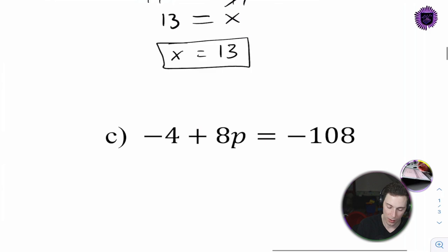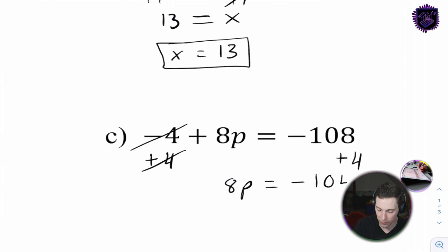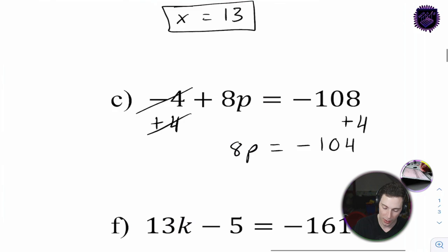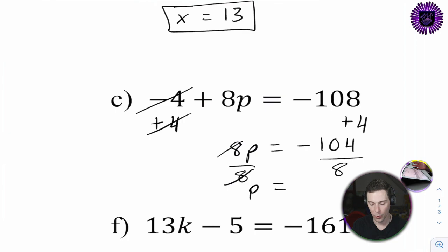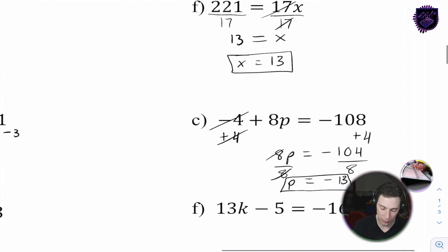Question 4C. We have negative 4 plus 8p equals negative 108. Let's add 4 to both sides. Negative 4 plus 4 cancels out, leaving 8p equals negative 104. Negative 108 plus 4 is negative 104 - moving up the number line. Then we divide by 8 on both sides, canceling out, leaving p equals negative 104 divided by 8, which is negative 13. P equals negative 13.